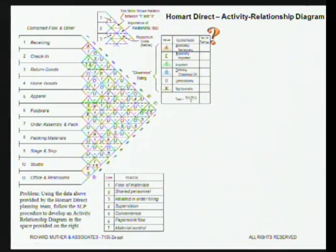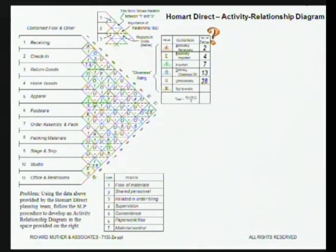We practice reading the chart — you read it at 45 degrees. We discuss the distribution of ratings: if you add up the A's, E's, and I's, you find a Pareto or 80/20 distribution where most relationships are unimportant or ordinary. Every now and then there's an X — a negative relationship, keeping things apart for some reason. The point is that this chart is sorting out the priorities for the layout. We talk about how you would build such a chart, who you would involve, and how long it would take.